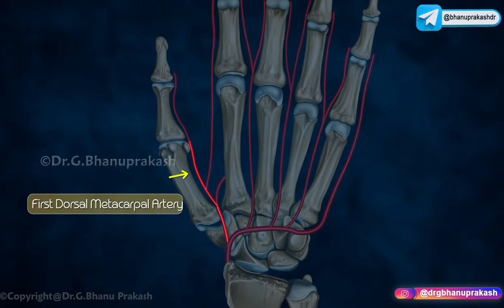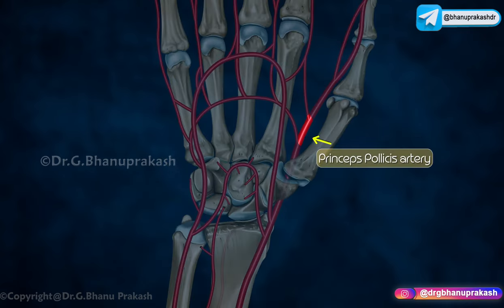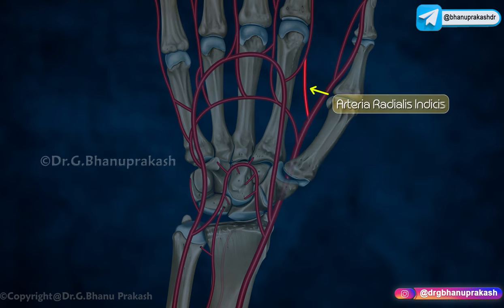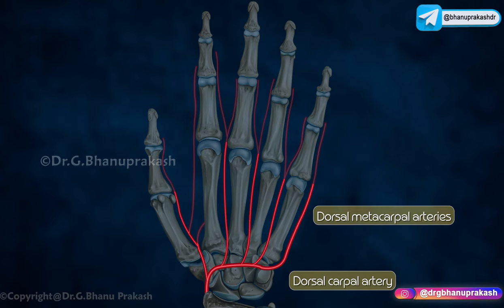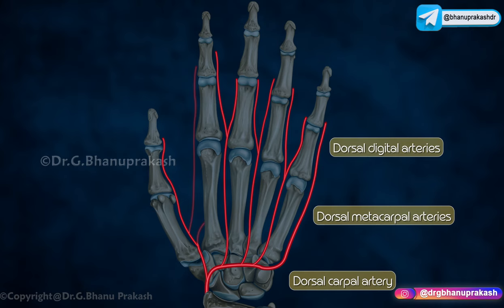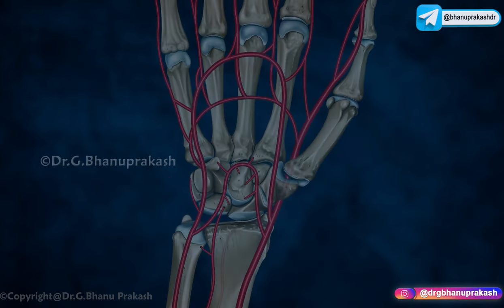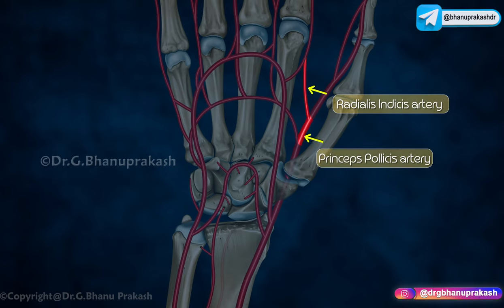First dorsal metacarpal artery, princeps pollicis artery, and arteria radialis indicis. The first branch of the radial artery within the hand is the dorsal carpal artery, which then gives off multiple dorsal metacarpal arteries. The dorsal metacarpal arteries become dorsal digital arteries within the fingers. The deep palmar arch gives off the radialis indicis and princeps pollicis arteries.